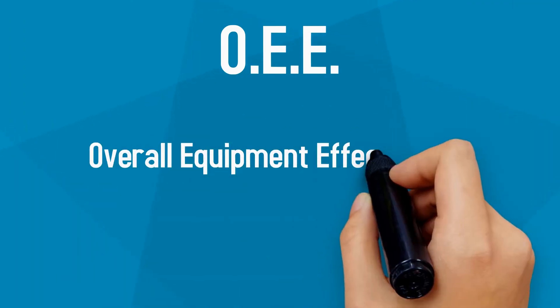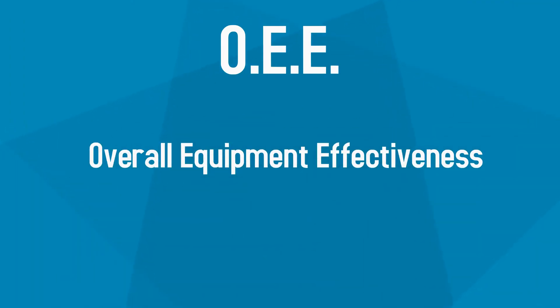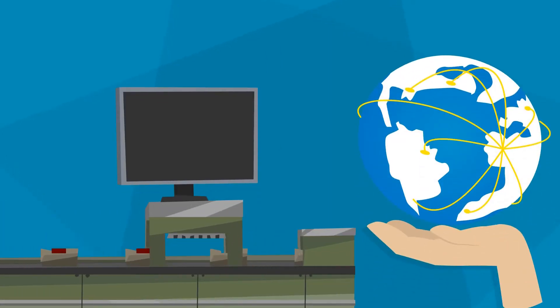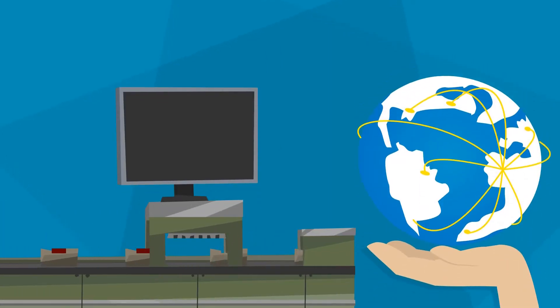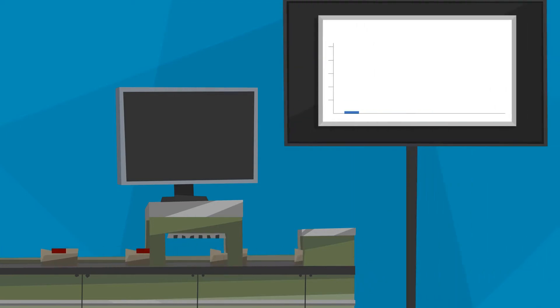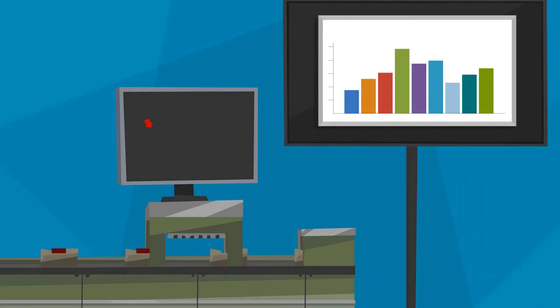OEE stands for Overall Equipment Effectiveness, which is the worldwide established metric for measuring the total productivity of a factory or product line. OEE was designed to monitor the success of production activities by recording respective losses for a defined period of time.